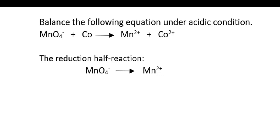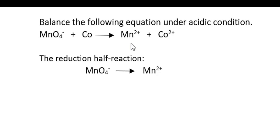Let's balance this redox reaction under acidic conditions. We have permanganate reacting with cobalt to form Mn²⁺ and Co²⁺. We will first determine the reduction and oxidation half reactions. By inspection, the Mn atom on the left is bonded to four oxygens and is highly oxidized, while on the right it is not. So the reduction half reaction is permanganate going to Mn²⁺, and the cobalt going to Co²⁺ must be the oxidation half reaction.